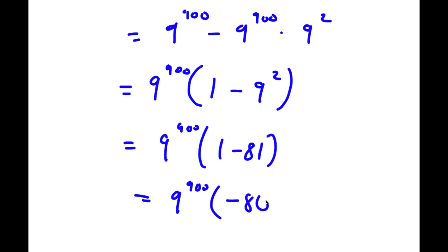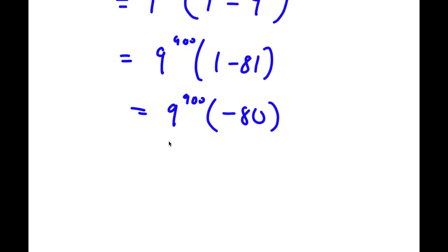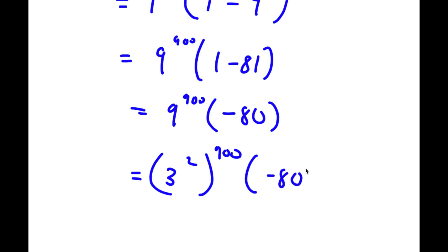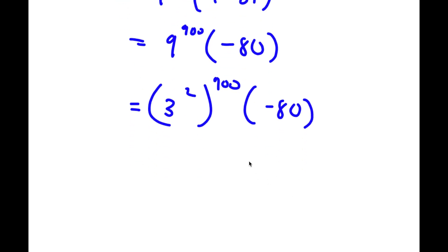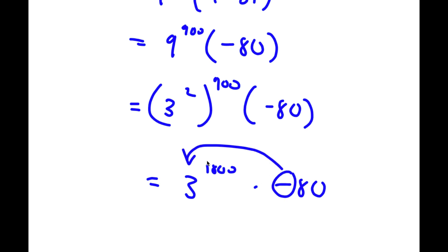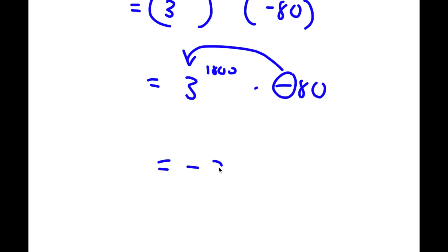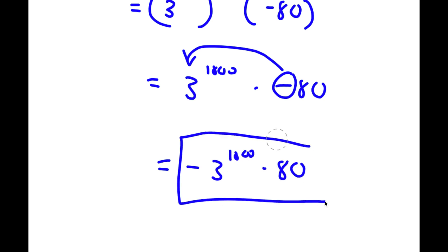So I have 9 to the power of 900 times negative 80. Now 9 is the same thing as 3 to the power of 2, so I have 3 to the power of 2 to the power of 900 times negative 80, which is the same thing as 3 to the power of 1,800 times negative 80. Moving the negative sign to the front, this equals negative 3 to the power of 1,800 times 80. So this is my answer.